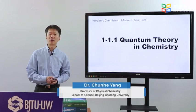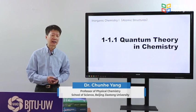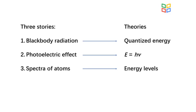The behavior of electrons can only be understood in terms of quantum mechanics. You may find almost all the books for elementary quantum mechanics have the same three stories: black-body radiation, photoelectric effect, and the spectra of atoms.